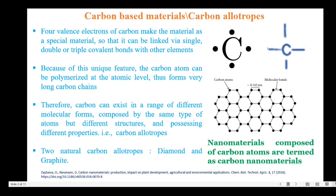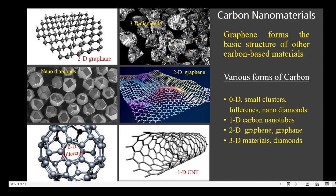Nanomaterials composed of carbon atoms are termed carbon nanomaterials. I hope you are all familiarized with graphene. Graphene forms the basic structure of other carbon based materials. Based on dimensions, the carbon nanomaterials are classified into four types: zero dimensional, one dimensional, two dimensional, and three dimensional carbon nanomaterials.